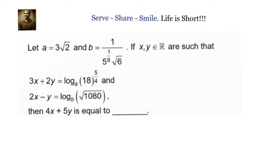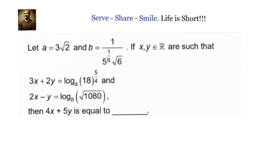Let a equals 3√2 and b equals (1/5)^(1/6) · √6. We have been given two equations and we have to find the value of 4x plus 5y. This is a simple linear equation in two variables problem. What makes it complicated is that instead of giving numbers, they have given logarithms. We need to know the properties of logarithms, simplify them, and get rational numbers on the right-hand side, then use the elimination method to find x and y.